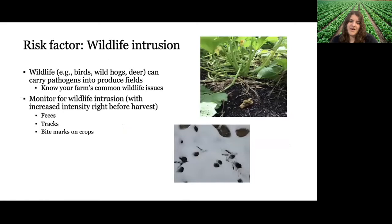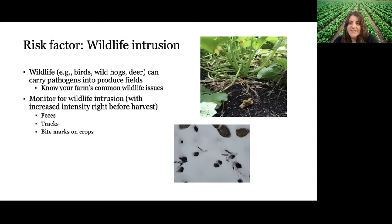The first risk factor is wildlife intrusion. Wildlife — things like birds, wild hogs, deer — can carry pathogens into produce fields. It's important to know your farm's common wildlife issues because different environments have different wildlife, which come with different pathogen issues and different seasonality issues. When monitoring for wildlife intrusion, you want to do it with increased intensity right before harvest. Telltale signs include feces, tracks (animal footprints on the ground), and bite marks on crops.